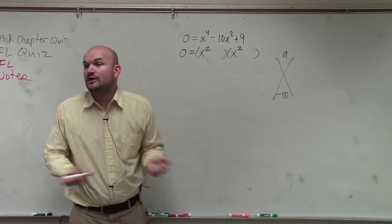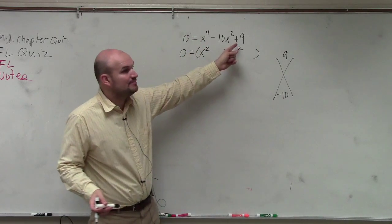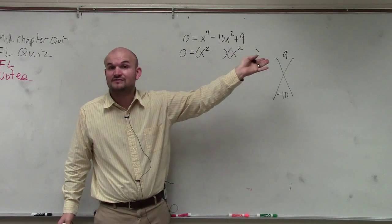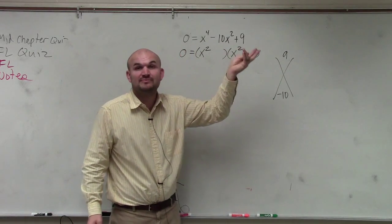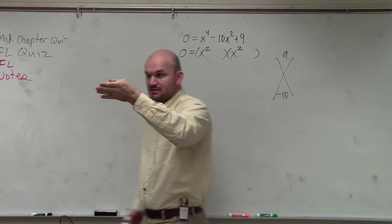Now let's figure out what two numbers multiply to give you 9, positive 9, but then add to give you negative 10. If they're adding to give you negative 10, we know both the factors have to be negative. And did you get it? So we have negative 9 and negative 1.